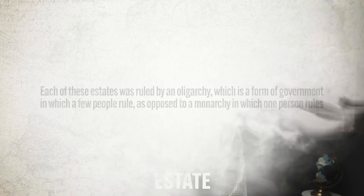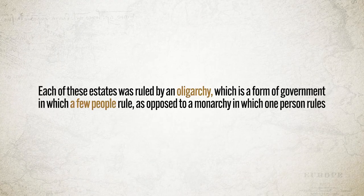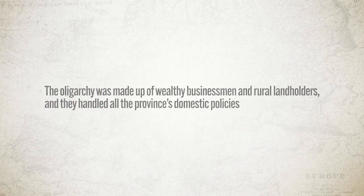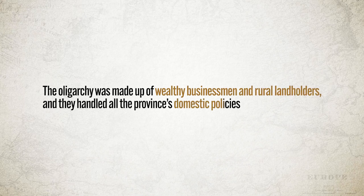Within the Netherlands there were provincial governments and a federal government, which you might roughly compare to the US — we have state governments and we have a federal government. In the Netherlands, each province had its own assembly called an estate, and the provincial estates held most of the power. Each of these states was ruled by an oligarchy — a form of government in which a few people rule, as opposed to a monarchy in which one person rules. The oligarchy was usually made up of wealthy businessmen and rural landowners, and they handled all the province's domestic policy.